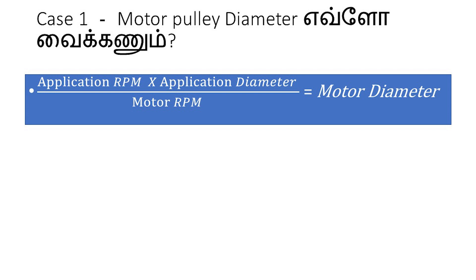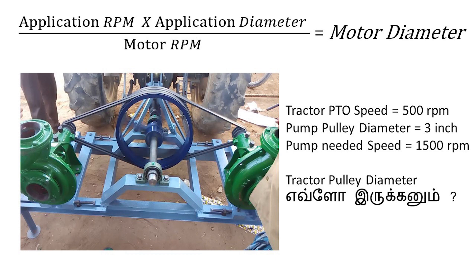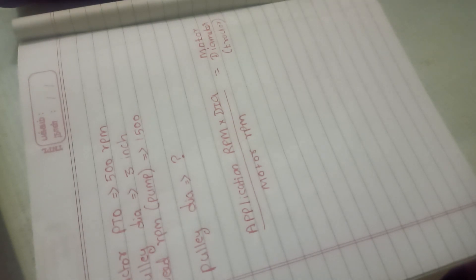In the example, we can see a calculation. First, we can see the tractor calculation. What we know is that the pump is running at a certain RPM. The PTO shaft is very high in RPM — we can use 500. So, the tractor is 500 RPM. Let's see the calculation.